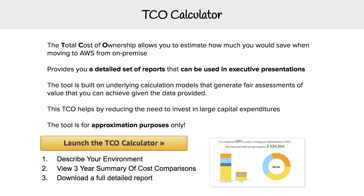The idea is that you would just launch the TCO calculator, describe your environment, you're going to get a three-year summary of cost comparisons, and then you can download that detailed report.